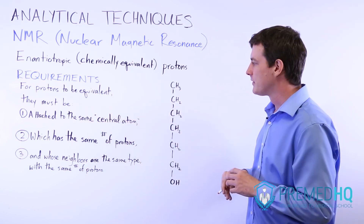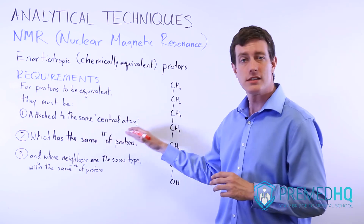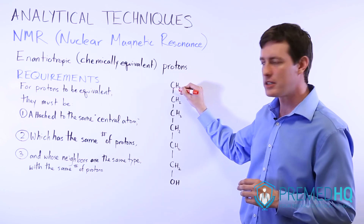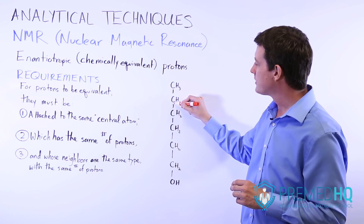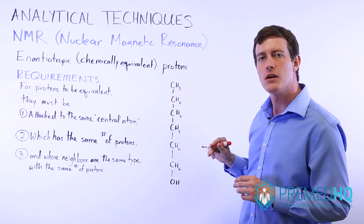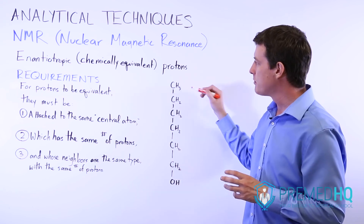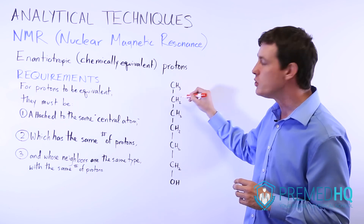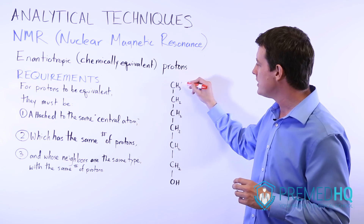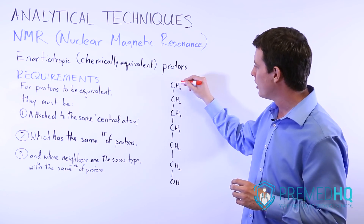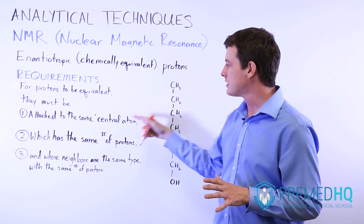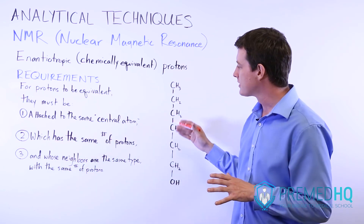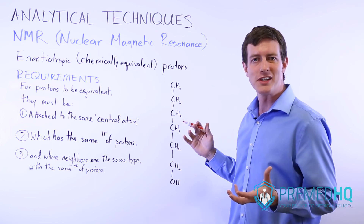The second requirement is that this central atom has to have the same number of protons attached to it. So a CH3 has three protons attached to that carbon, whereas a CH2 has only two hydrogens attached. These will not be considered chemically equivalent because one proton is part of a central atom that only has two hydrogens attached, whereas the other protons are attached to a carbon that has three hydrogens on it. So the central atom needs to have the same number of protons — or hydrogens, we can use either term.